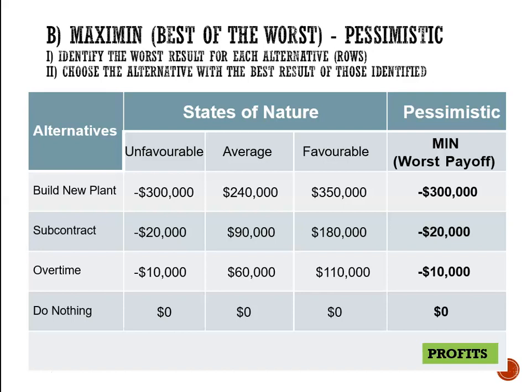Now we've narrowed down to one profit or loss per option. Building a new plant results in a loss of 300,000 dollars. Subcontracting gives a loss of 20,000 dollars. Overtime gives a loss of 10,000 dollars. Doing nothing results in neither a gain nor a loss — just zero. Of those choices, the best choice is to do nothing: gain nothing, lose nothing, but definitely better than the other options where we're losing money. So using Maximin, the choice would be do nothing.